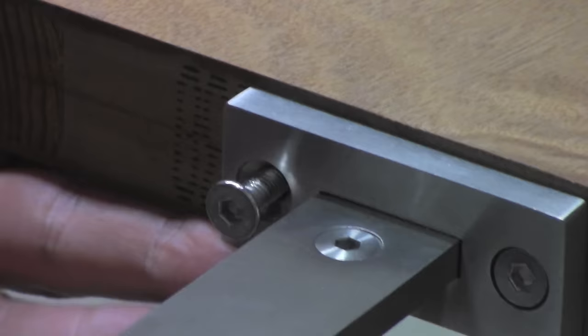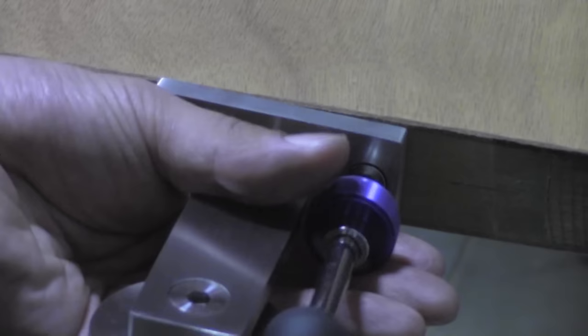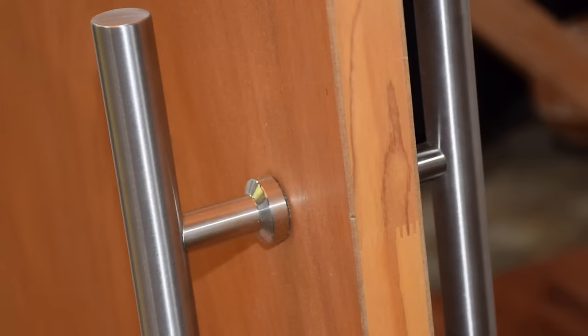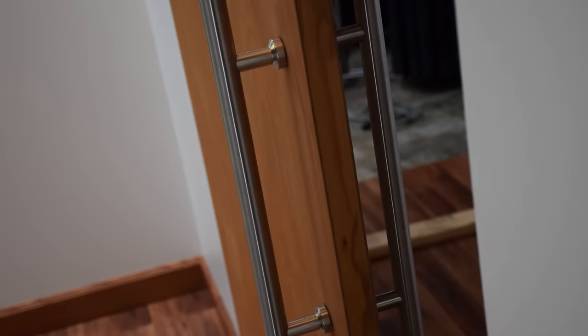Next, apply your door bracket and fasten the screws into the threaded inserts to lock into place. Repeat these steps for the bracket on the other side and the hardware for the top of the door will be complete.